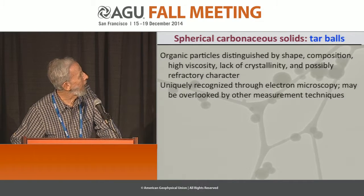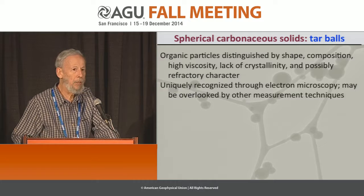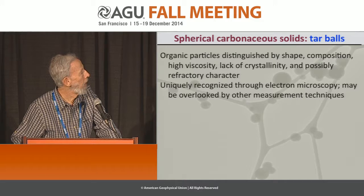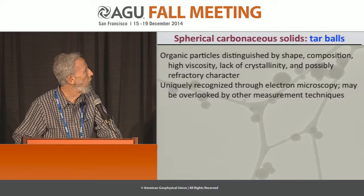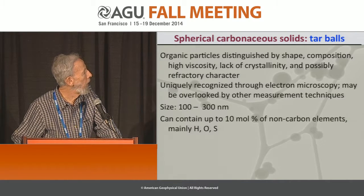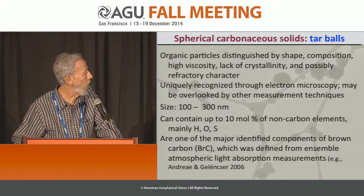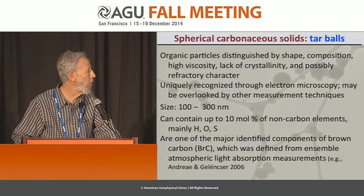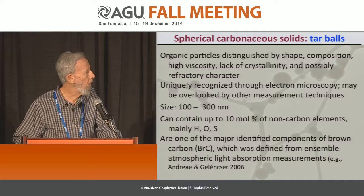Tarballs are organic particles distinguished by shape, composition, high viscosity, lack of crystallinity, and possibly refractory character, as I'll show. They're uniquely recognized through electron microscopy — I don't know any other way of identifying tarballs, at least so far. The size range is roughly 100 to 300 nanometers, and they can contain up to 10% of elements other than carbon. They are one of the major identified components of brown carbon, identified mainly on the basis of light absorption measurements, but here we see the actual particles.